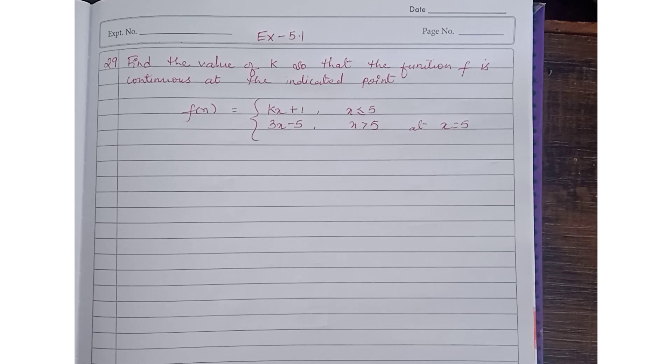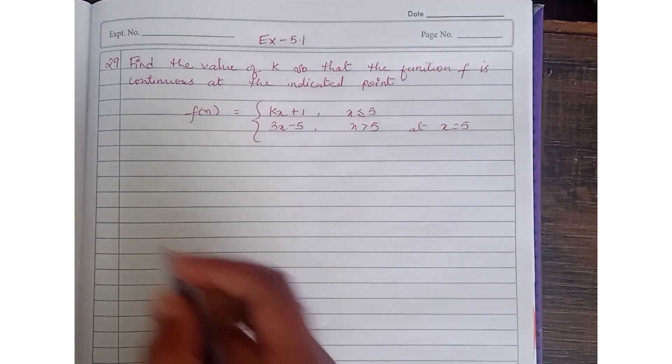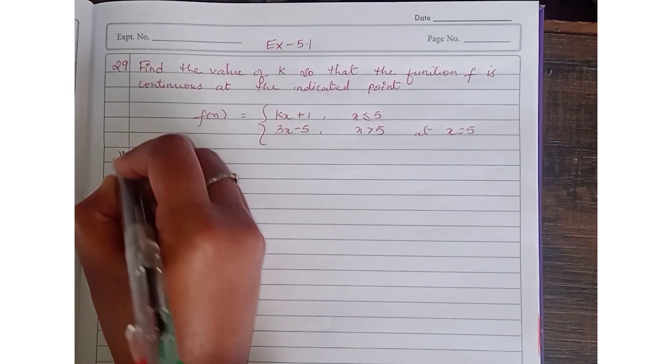f(x) equals kx plus 1 when x is less than or equal to 5, and 3x minus 5 when x is greater than 5, at x equals 5. So here we have to find the k value to make the function continuous at x equals 5.